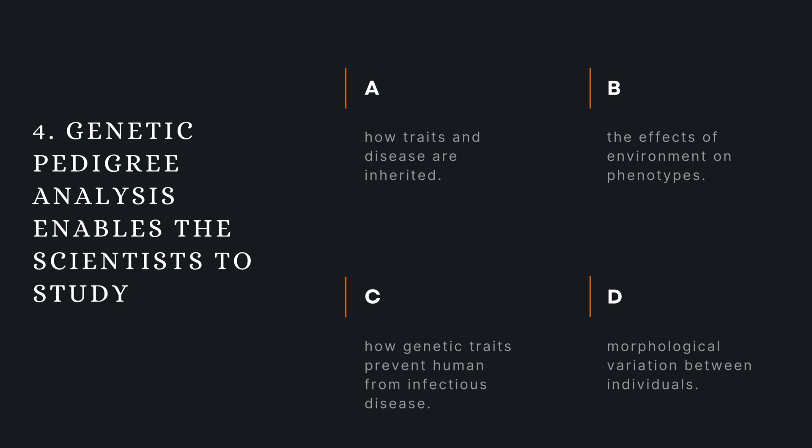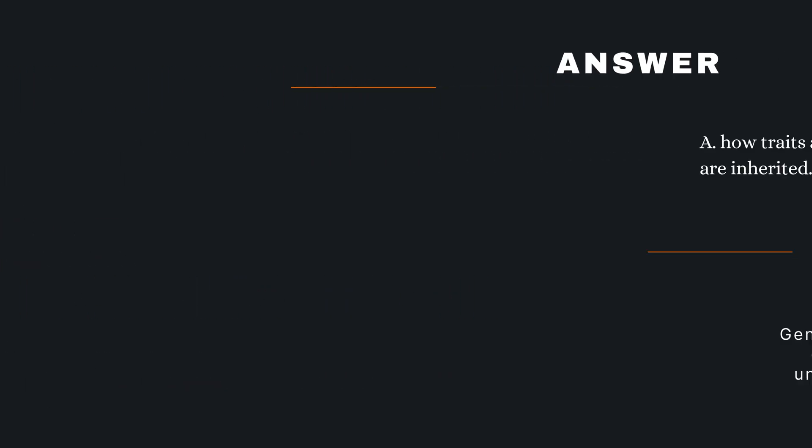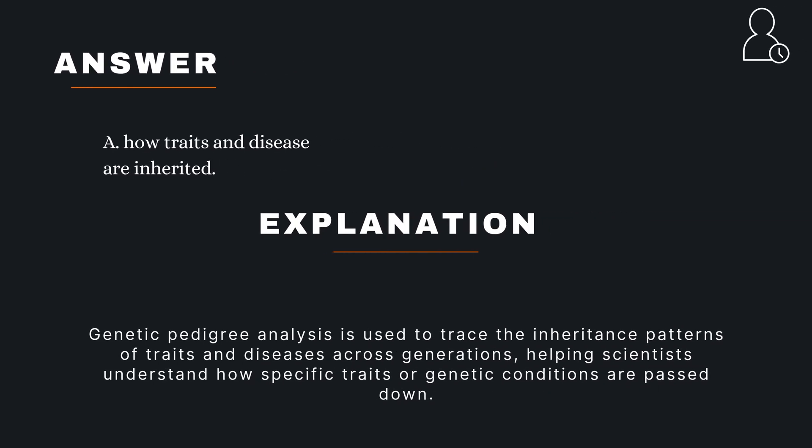Question 4. Genetic pedigree analysis enables the scientists to study: A — how traits and disease are inherited; B — the effects of environment on phenotypes; C — how genetic traits prevent human from infectious disease; D — the morphological variation between individuals. The correct answer is A — how traits and disease are inherited.